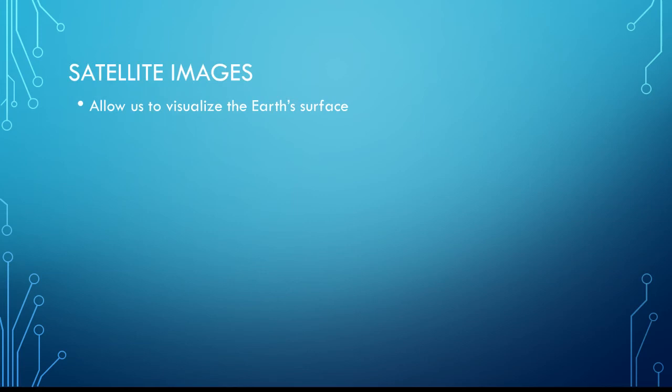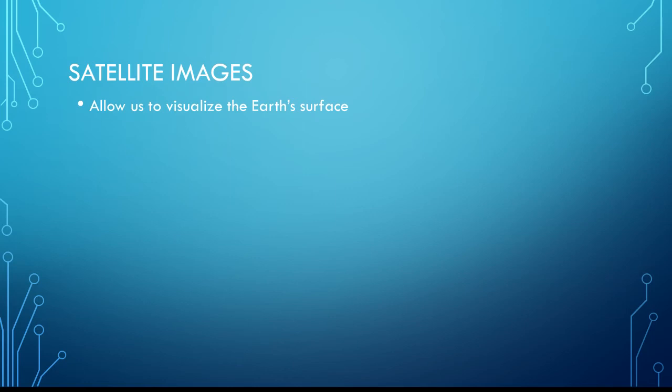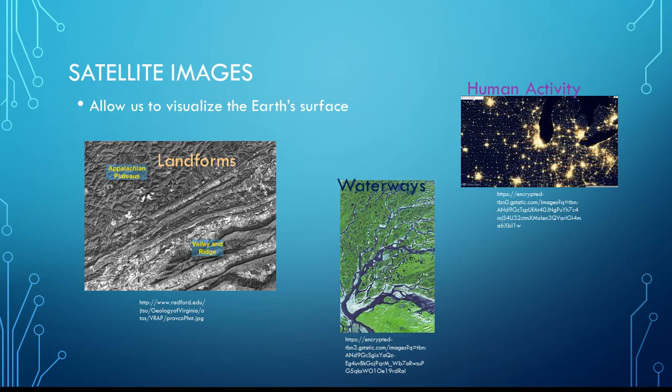Another way to understand the world better and to answer some of our geographic questions is by looking at satellite images. They allow us to visualize the Earth's surface in ways that were not possible for our ancestors. We can look at landforms, waterways, and at evidence of human activity, like these lights on this map.